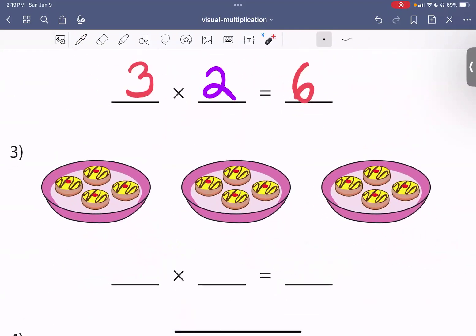We have three pans of donuts. In each pan of donut, in each pan, there are four donuts. So four times three is twelve.